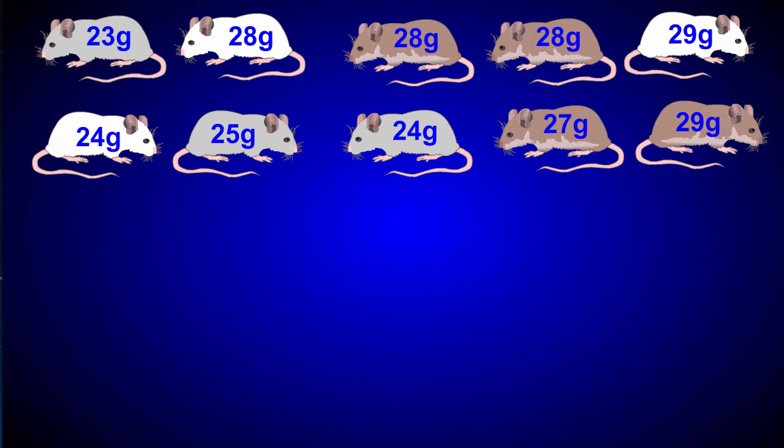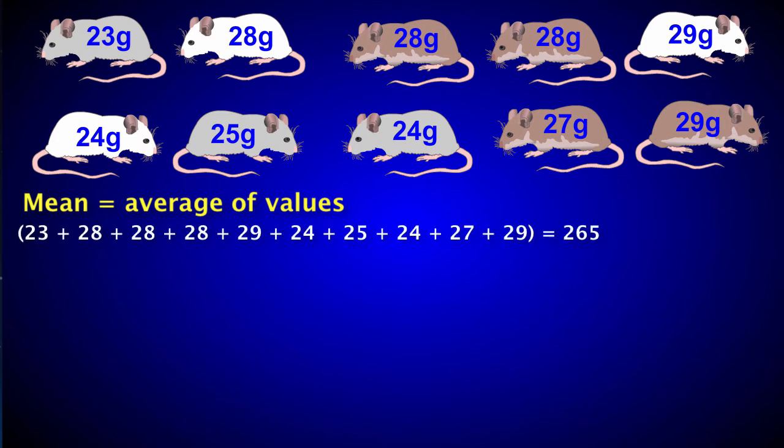Let's say you weighed each mouse in this group. Now you want to know the mean weight of the entire population. Mean is just another name for average. So to find the mean weight, simply add up all the weight values and then divide by the number of individuals in the population. The mean weight of this group is 26.5.